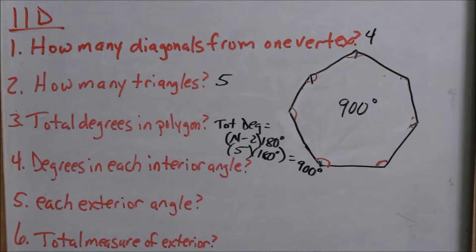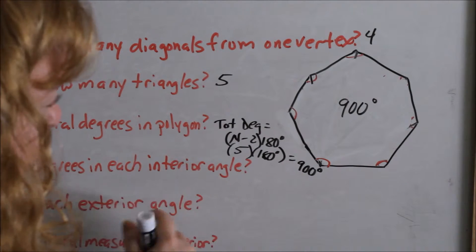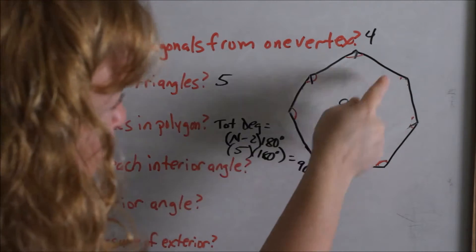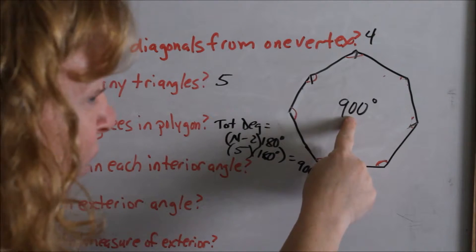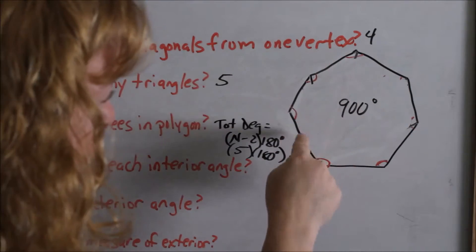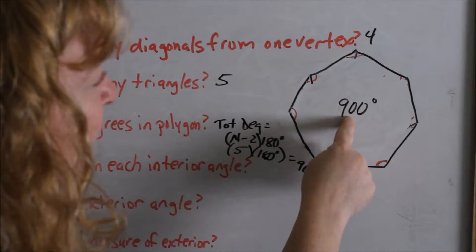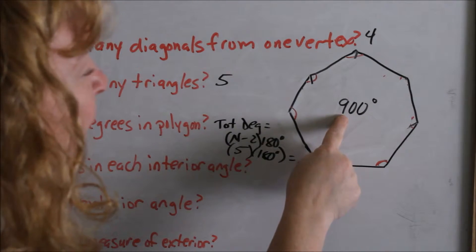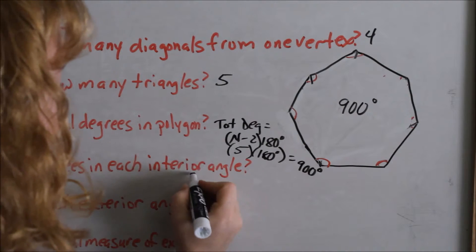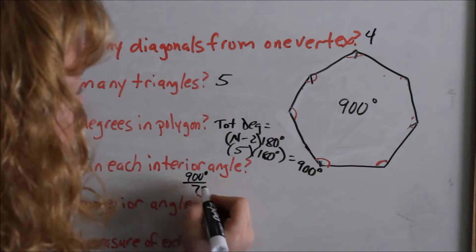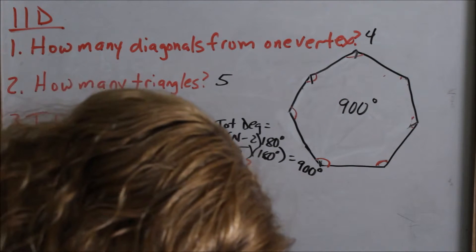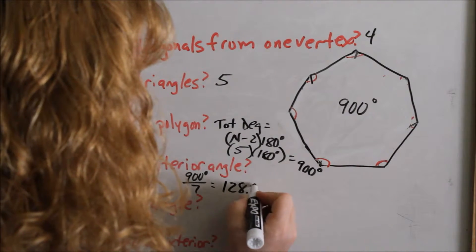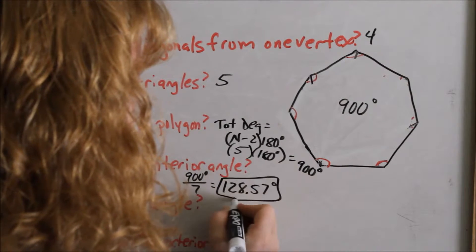Number four asks: how many degrees are in each interior angle? If there are seven sides, there are seven angles. We take our total of 900 degrees and divide it by the seven angles — divide 900 evenly into each of the seven angles. That comes out to 128.57 degrees, rounded to two decimals.